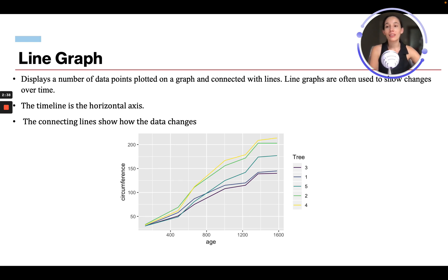So then we have a line graph. This displays a number of data points plotted on a graph and connected with lines. They're often used to show a change over time. So the timeline is on the horizontal axis. This could be, in this case it's age, but it could be years. It's the length of time. The connecting lines show data changes. So this is showing tree circumference change over time, and the lines are connecting the points to show the change over time.